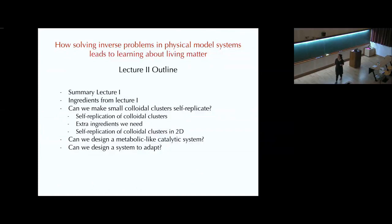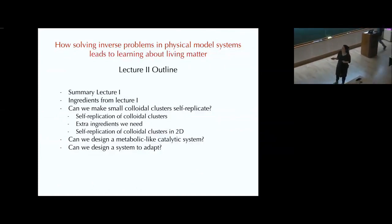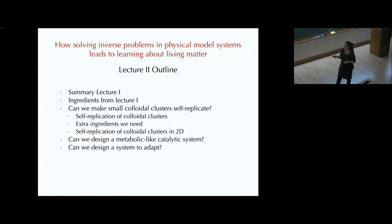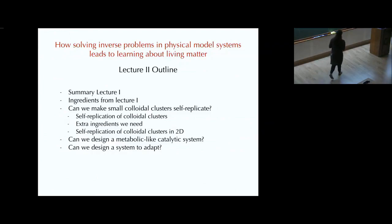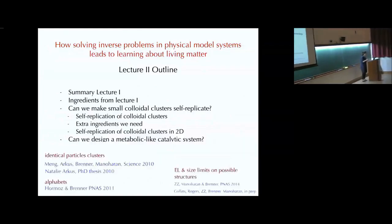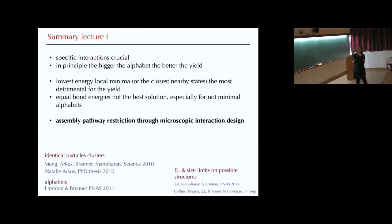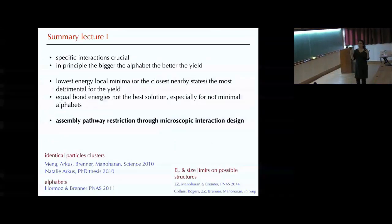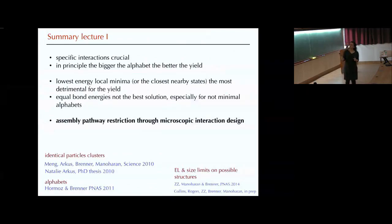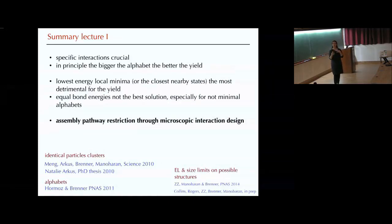I'm going to briefly summarize some main things from yesterday, remind you of some ingredients that we needed to successfully assemble various structures, and then talk about self-replicating systems and catalytic and adaptable systems. Very briefly, yesterday I showed that you definitely need specific interactions to make arbitrary objects that are not lattices, and in principle the more species we have the better the success of assembly. We talked about how the lowest energy local minima are mostly detrimental for yield, and how we can optimize bond strength to improve yield.